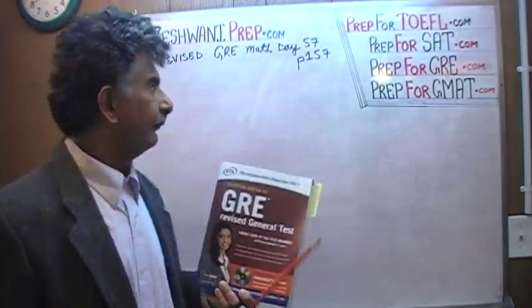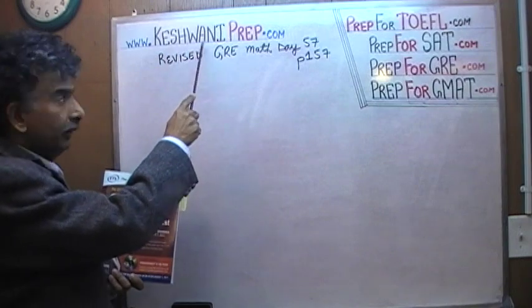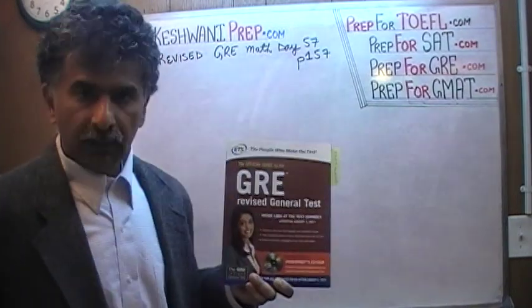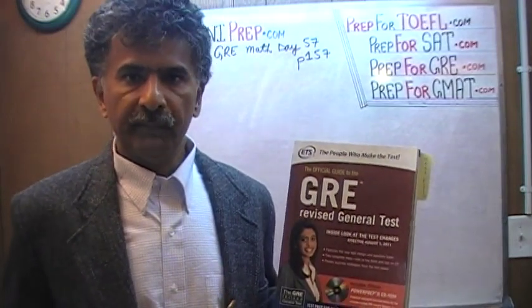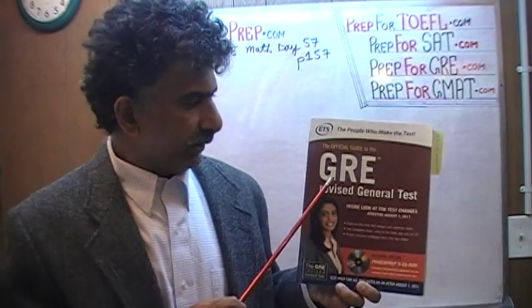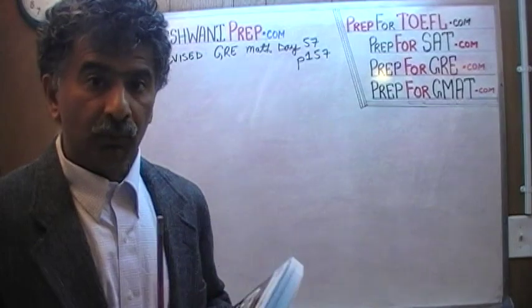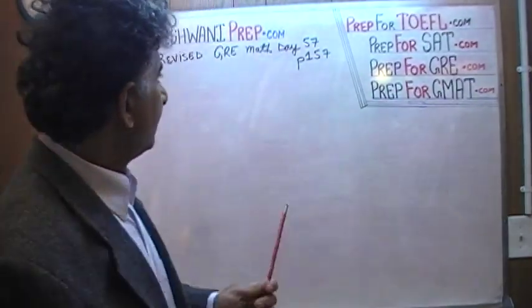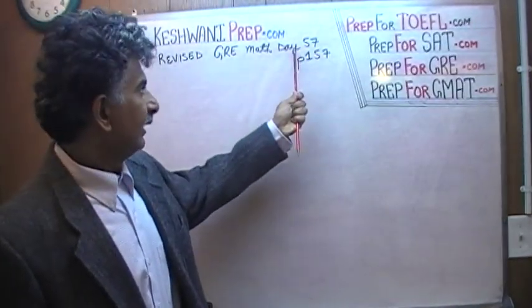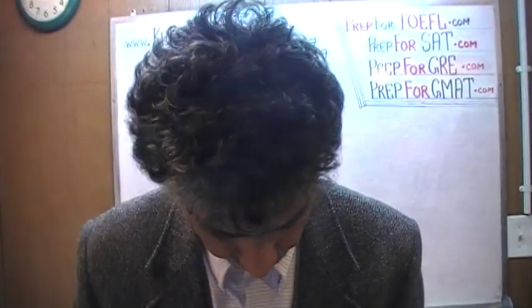Hello, my name is Keshwani. We are here because we want to prepare for the GRE — the math portion of the GRE. We have been solving math problems out of this book, the Official Guide to the GRE Revised General Test. If you do not own this book already, purchase one immediately — you are going to need it. Please turn to page number 157. Today is our lesson number 57.